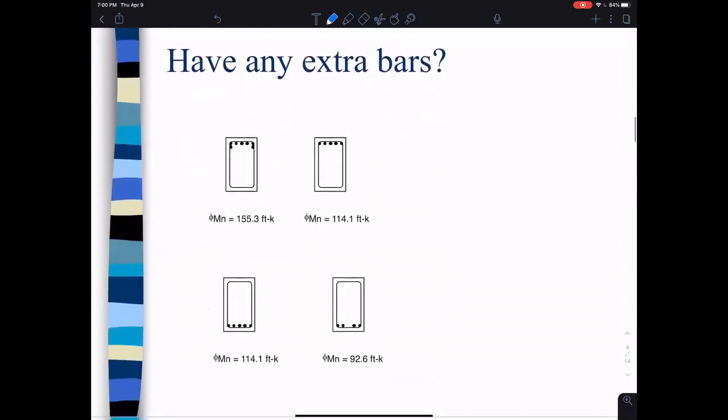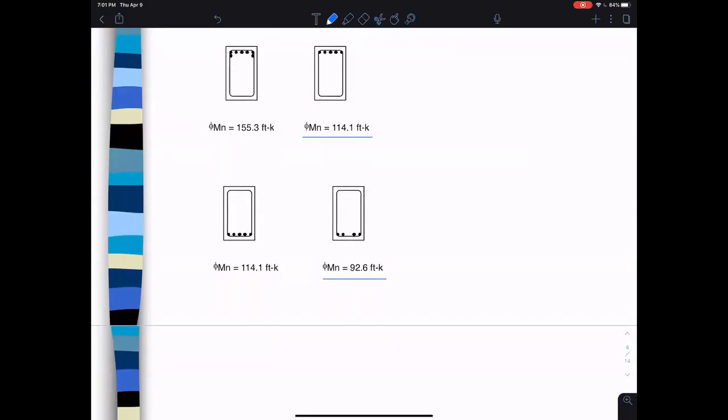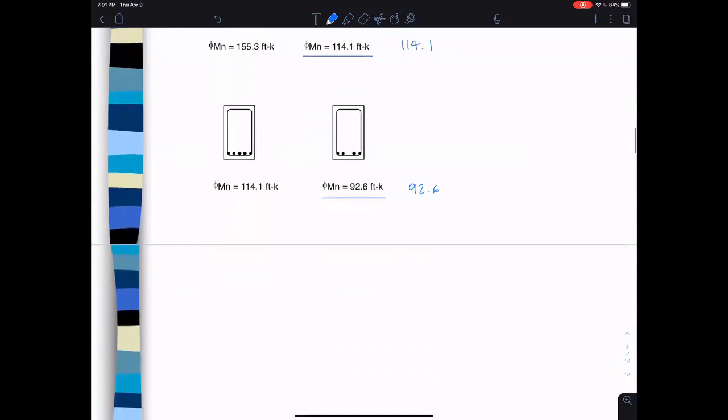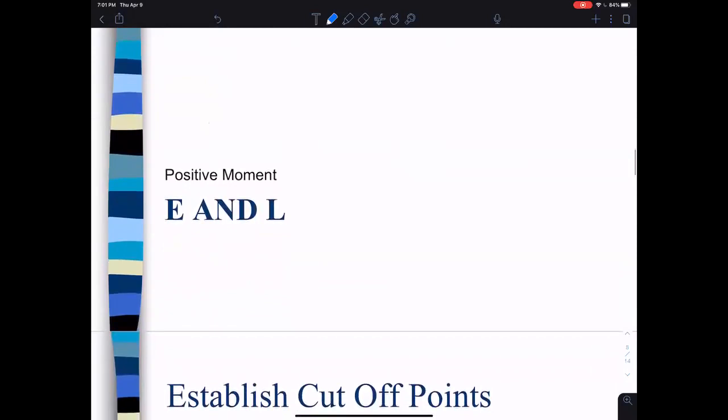Have any extra bars - I already did that. So this is the full set of bars, and this is the reduced, and this is the reduced. I saved you a step - I've already calculated the reduced phi Mn's. When you take out the bars, the phi Mn goes down. The numbers you need to remember are 114.1 and 92.6.